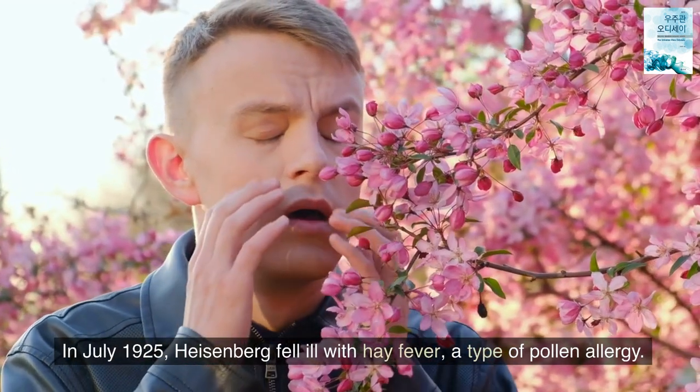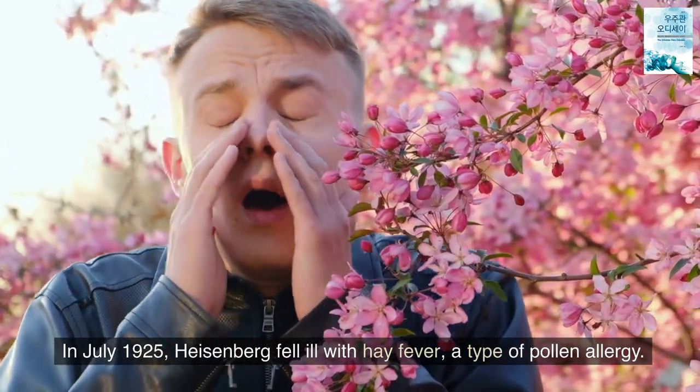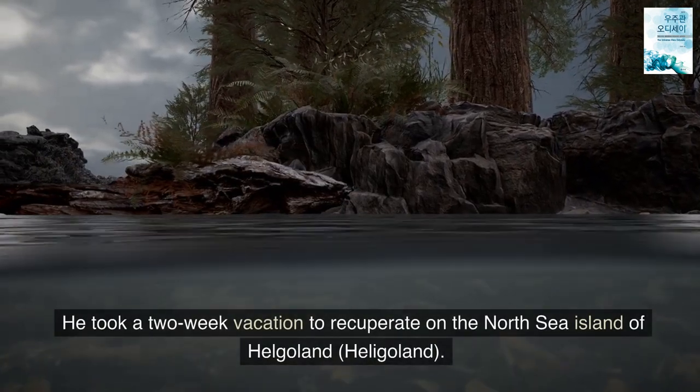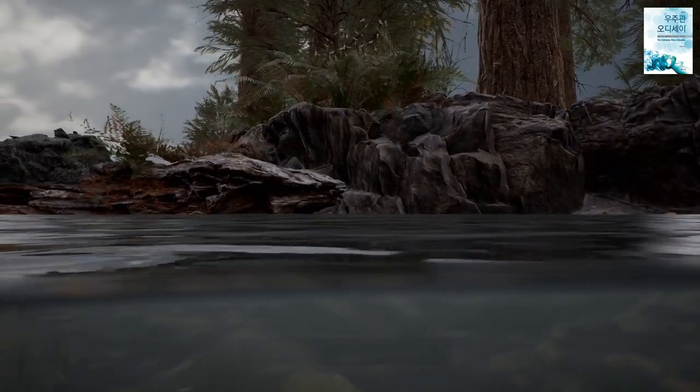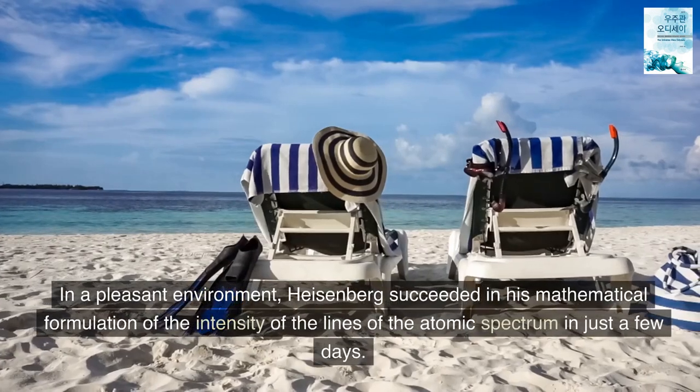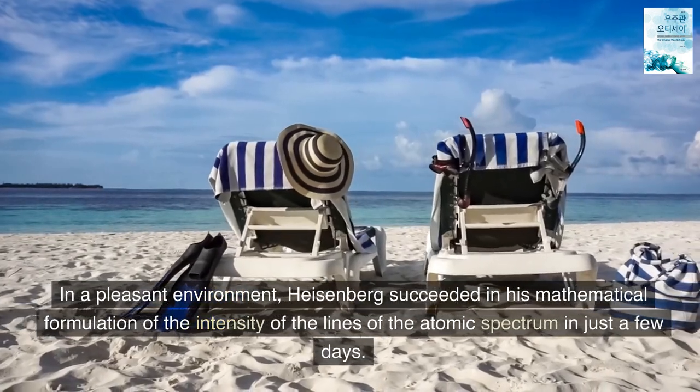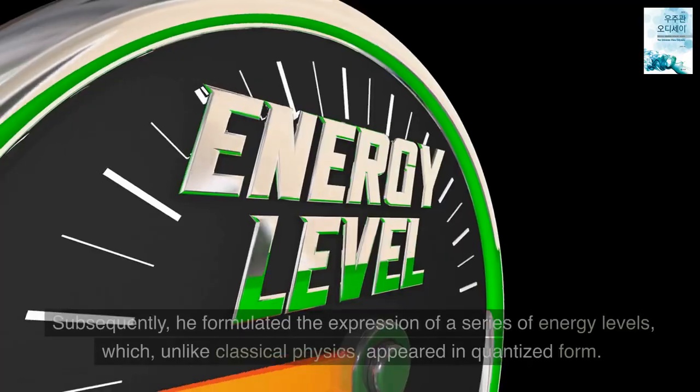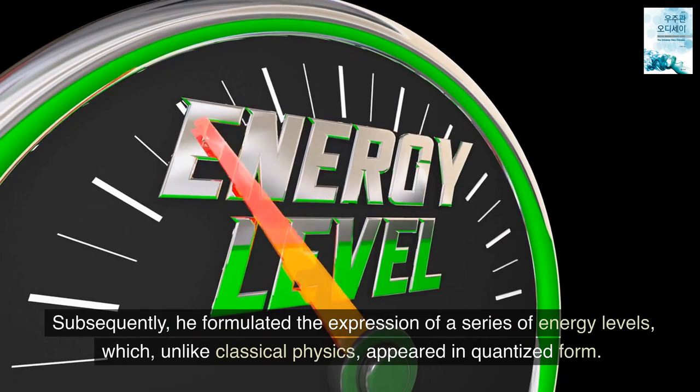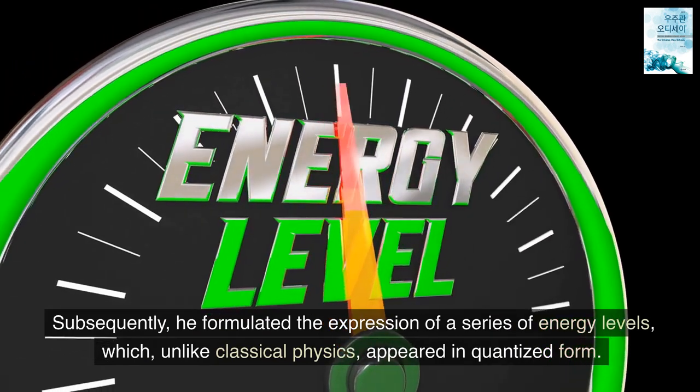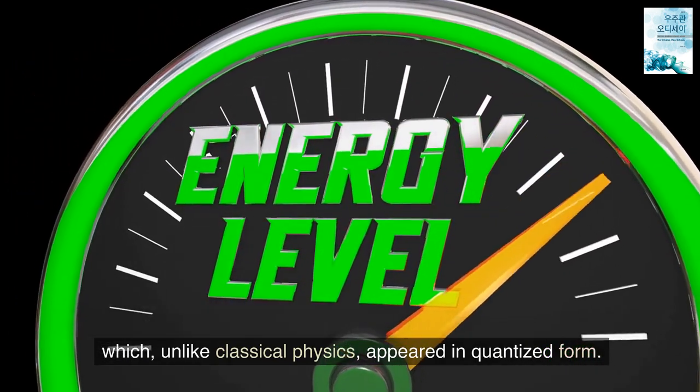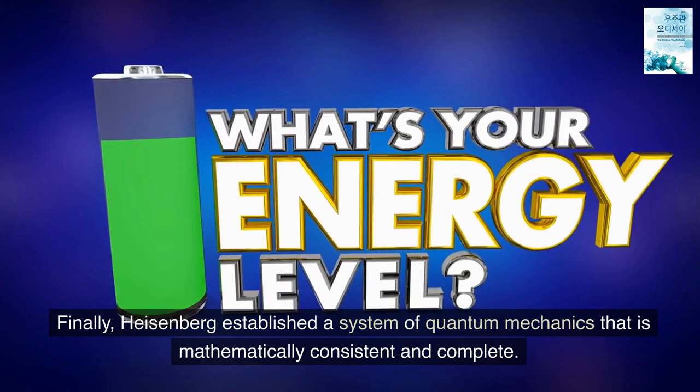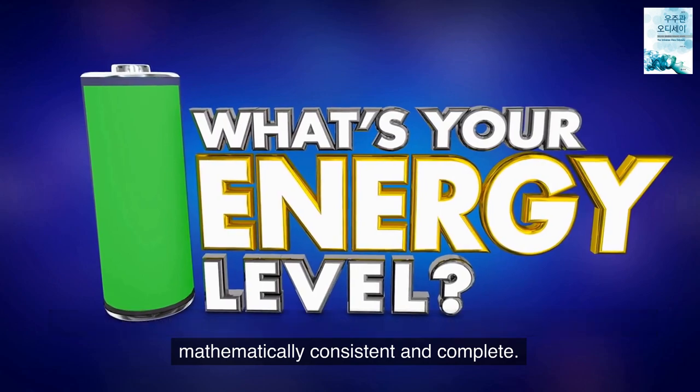In July 1925, Heisenberg fell ill with hay fever, a type of pollen allergy. He took a two-week vacation to recuperate on the North Sea island of Helgoland, Heligoland. In a pleasant environment, Heisenberg succeeded in his mathematical formulation of the intensity of the lines of the atomic spectrum in just a few days. Subsequently, he formulated the expression of a series of energy levels, which, unlike classical physics, appeared in quantized form. Finally, Heisenberg established a system of quantum mechanics that is mathematically consistent and complete.